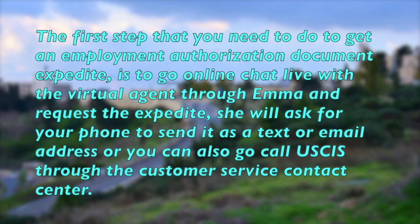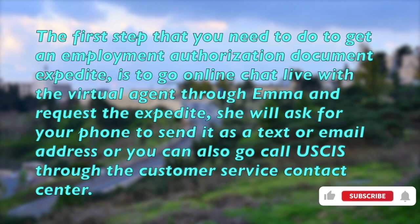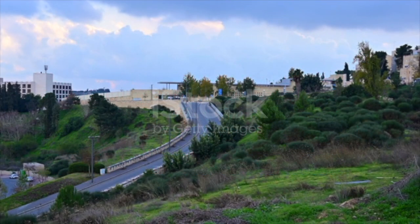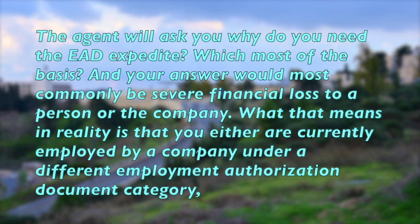The first step to get your employment authorization document expedited is to go online and chat live with the virtual agent through Emma and request the expedite. She will ask for your phone number to send a text, or your email address. You can also call USCIS through the customer service contact center.